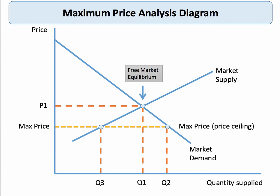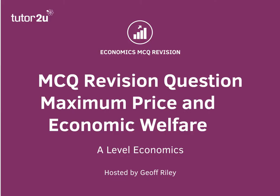However, producers will be worse off. With a price ceiling, they are likely to contract their supply from Q1 to Q3, and their revenue and producer surplus will have declined. Although some consumers are better off at the lower price, the quantity will shrink, so we can't be sure what happens in net terms to consumer welfare overall. People able to buy at the cheaper price will be better off, but there may be fewer of those, depending on where the maximum price is set and the elasticity of demand. That's why the answer is C.